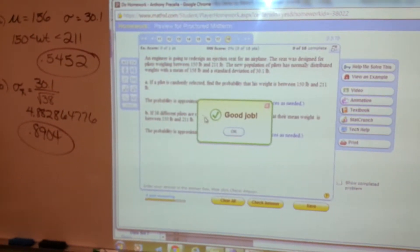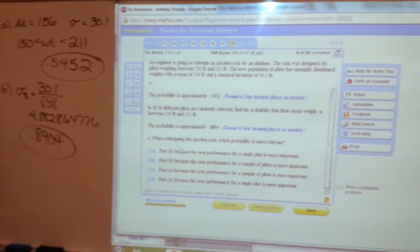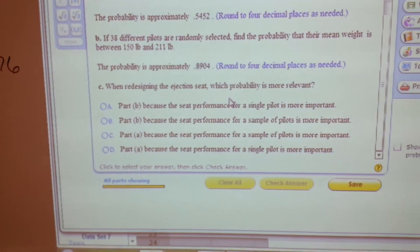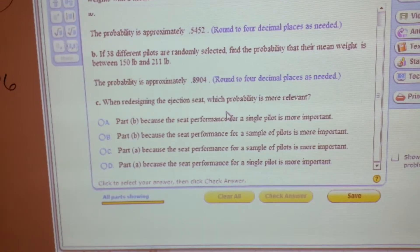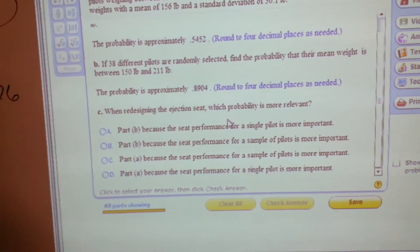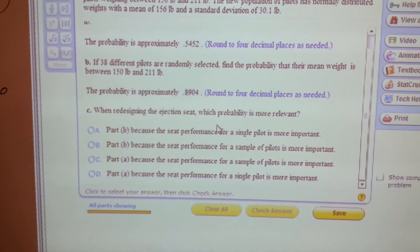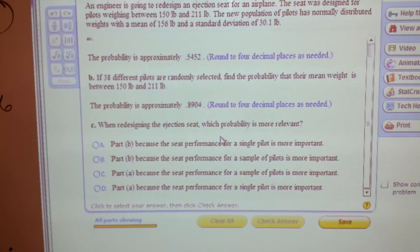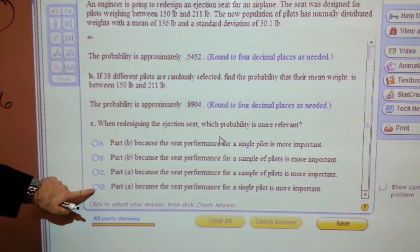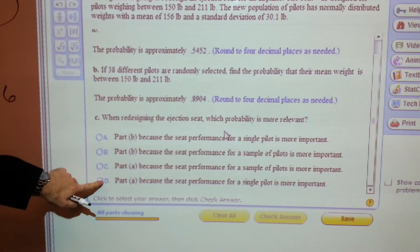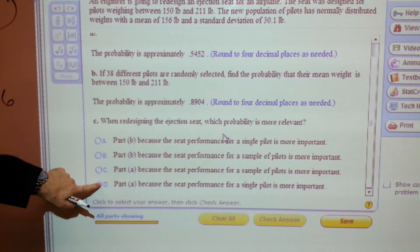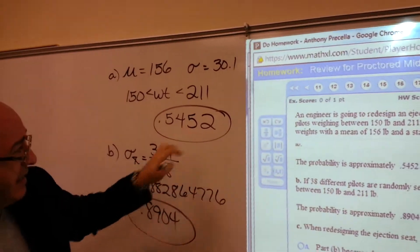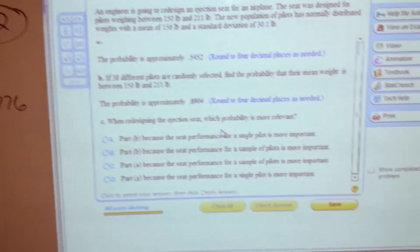Now I think there's one more question here. When redesigning the ejection seat, which probability is more relevant? Well, I would think you would be more concerned with the probability not of the sample, but just the individual pilot. So part A, because the seat performance for a single pilot is more important. And that's not too great, so I'm going to say part A.